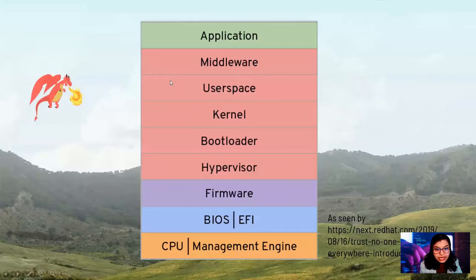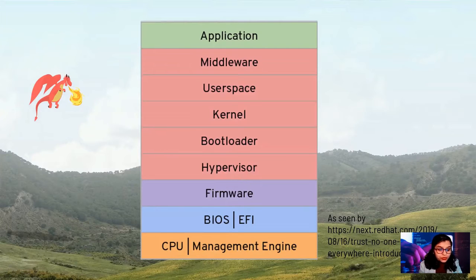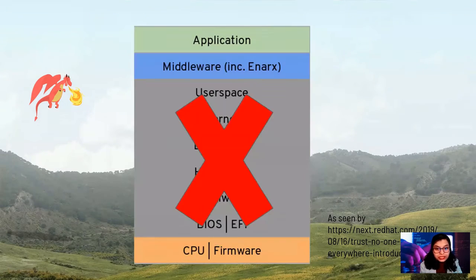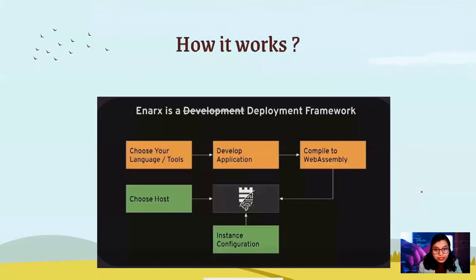Let's understand how Anax reduces these limitations in more detail. This is a normal structure of systems on the cloud. Anax focuses on reducing trust relationships — we just need to trust the CPU and the firmware, and wipe out the need to trust any of the other layers above it. The most important thing is that Anax is a deployment framework. It lets you choose whatever language you want, compile it to WebAssembly, choose the host, and then you are ready to deploy it to the Anax stack.